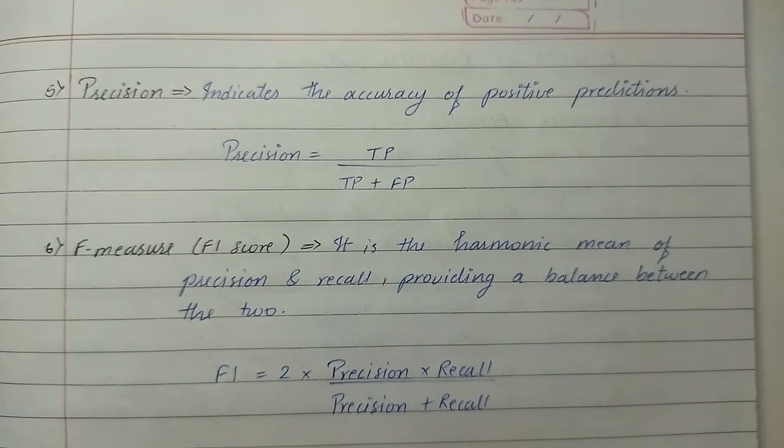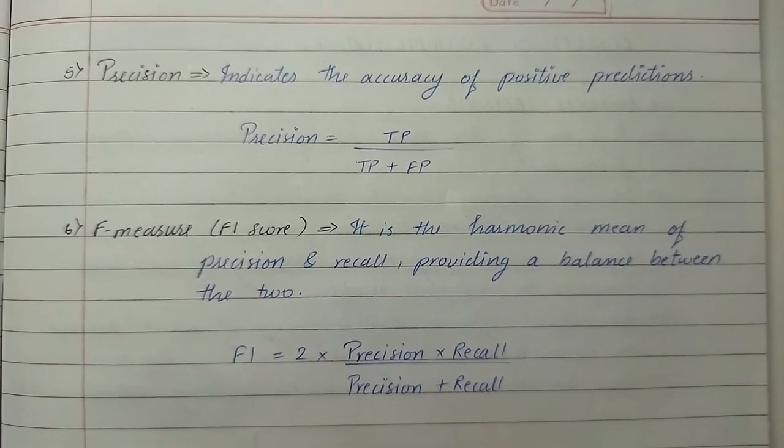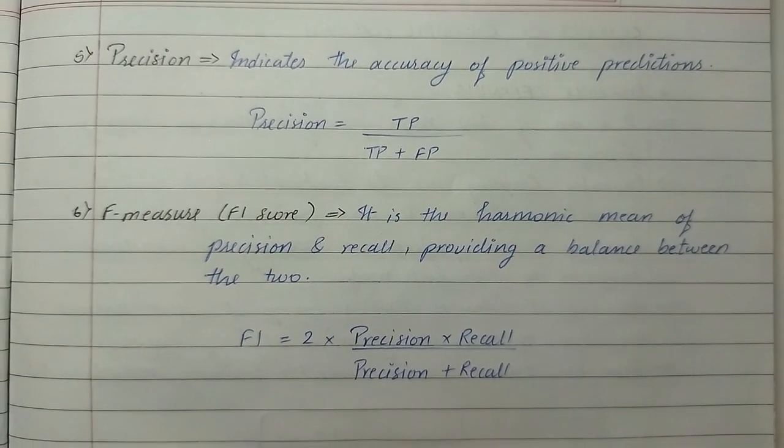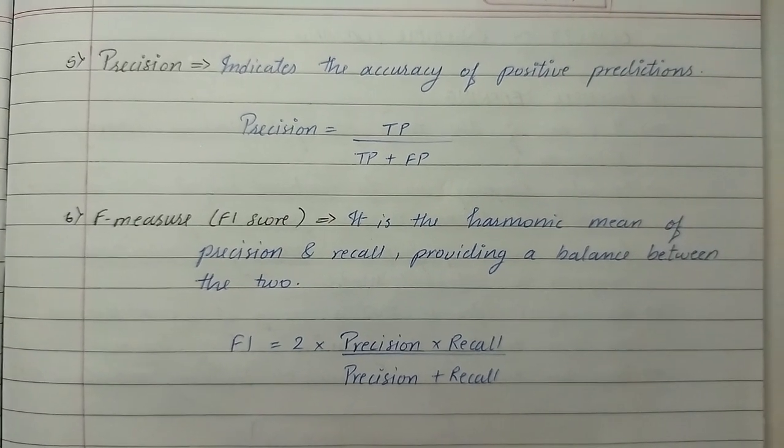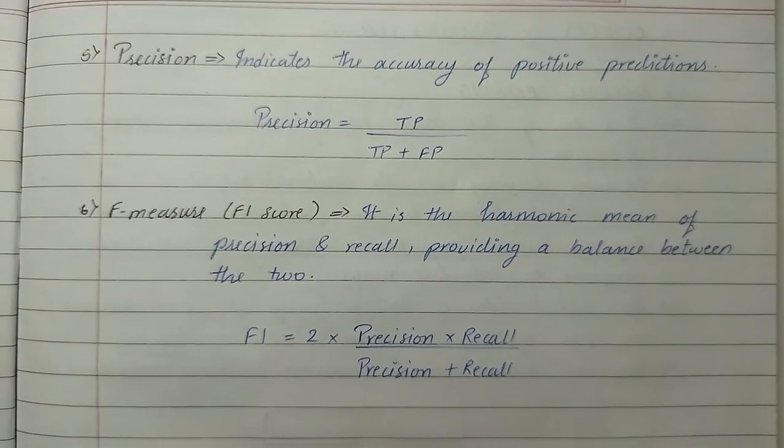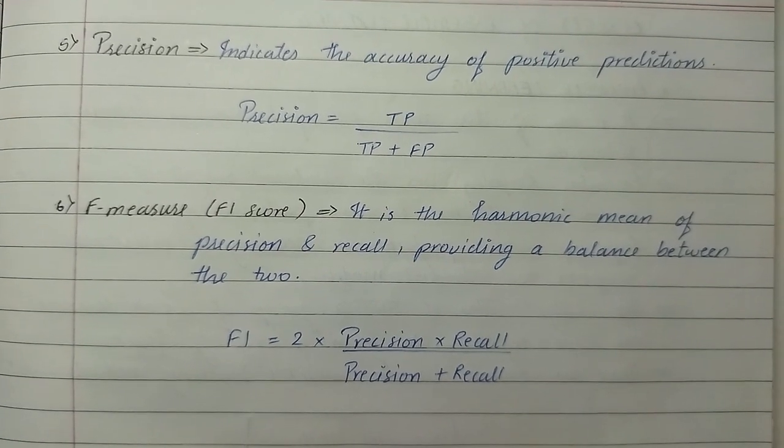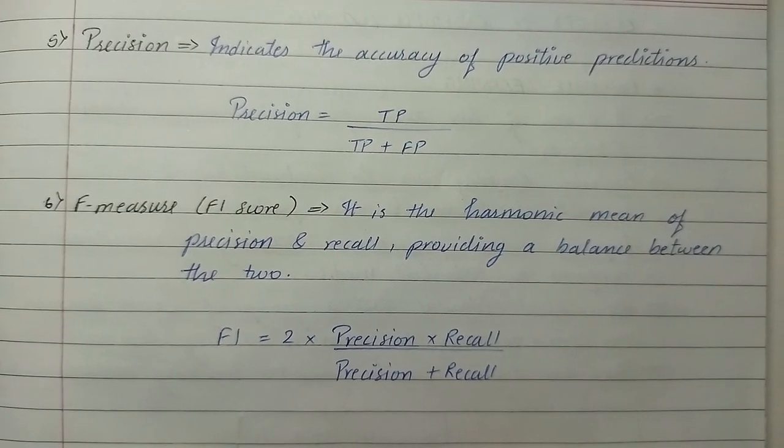The fifth performance matrix is precision. Precision indicates the accuracy of positive predictions. The formula for precision is true positive upon true positive plus false positive.